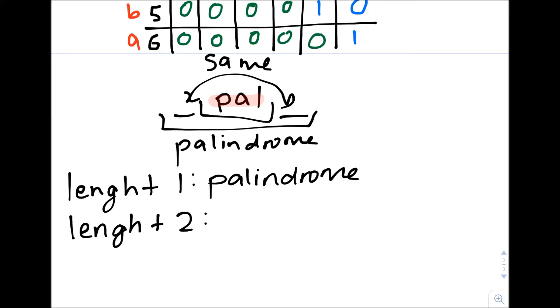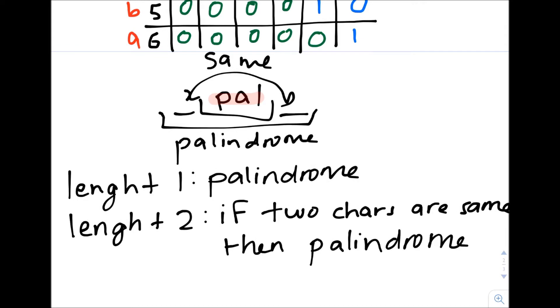If we have a string of length 2, if the two characters are the same, this would be a string like AA or BB, then it's a palindrome. Otherwise, it's not a palindrome. And from strings of length 2, we get the strings of length 4, 6, 8, and so forth. Using these two base cases and this formula, we can find all the palindromes of all lengths and create this table.